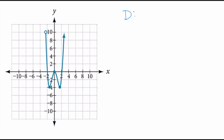Go ahead and try this problem on your own. The domain starts at the lowest x-value, which is approximately negative 2.1 comma 10. Because it doesn't look exactly like negative 2 and they haven't given us an exact value, we approximate. There's no other place that takes on that negative 2.1, so I use a parenthesis. The graph continues all the way toward positive infinity, so all x-values greater than negative 2.1.